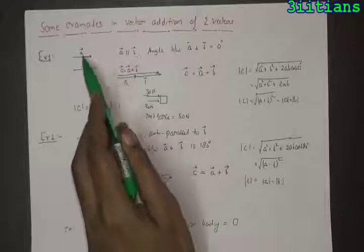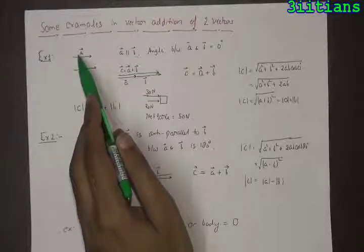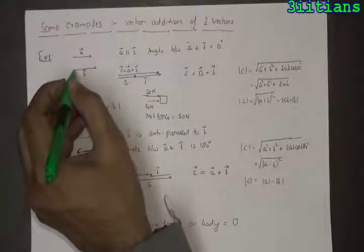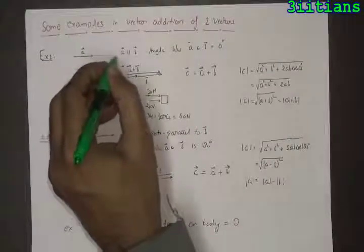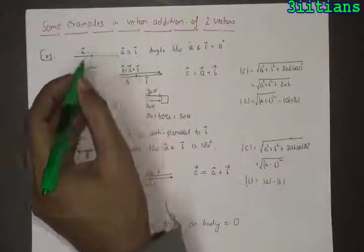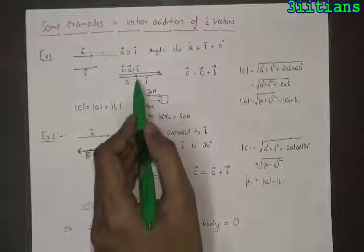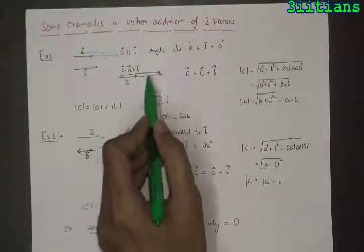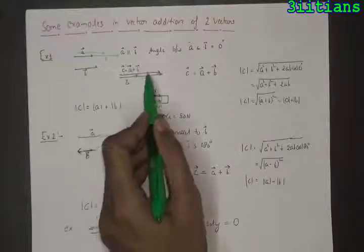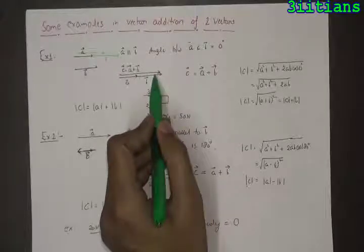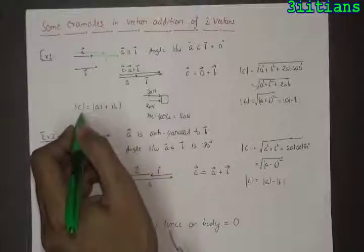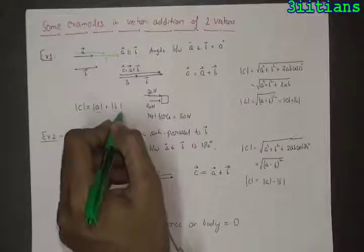What about the sum of these two vectors? We have to take the tail of one vector and put it on the head of another vector. The third side of the triangle will be the sum of these two vectors. We have taken the tail of b vector and placed it on the head of a vector. The third side of the triangle is along the same line and the magnitude of the third side will simply be equal to the magnitude of a vector plus the magnitude of b vector.